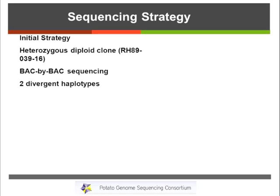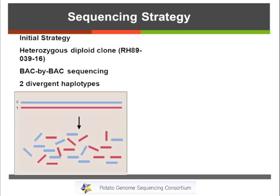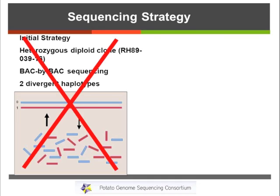As we started to collect initial data, we realized that the haplotypes in this diploid were quite divergent from each other. The first thought was that we'd have two haplotypes — call them zero and one — chop them up, make a BAC library, sequence them, and then assemble back the two haplotypes. But that turned out to be very difficult because the two haplotypes differed quite a bit outside of the genic regions.